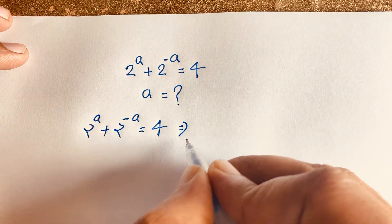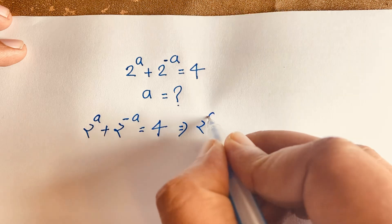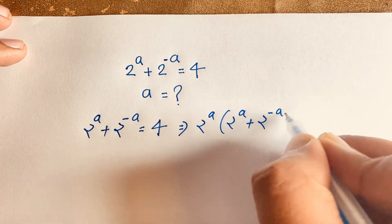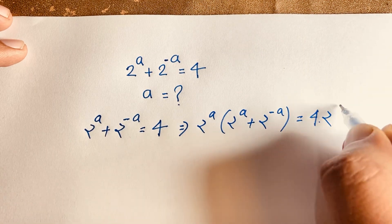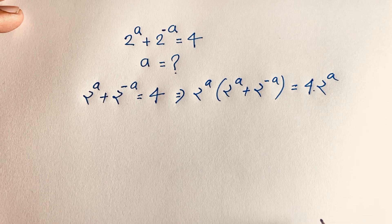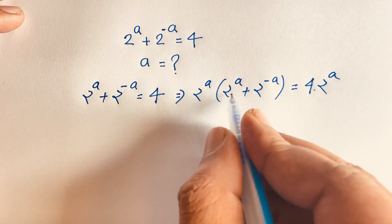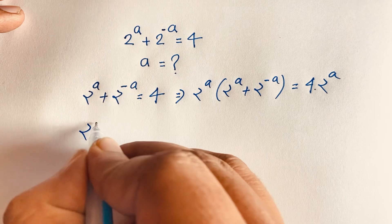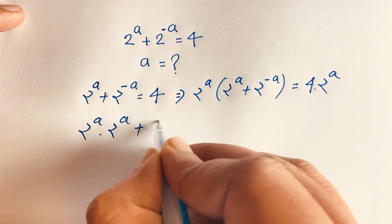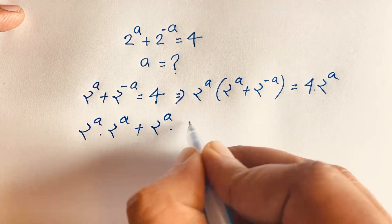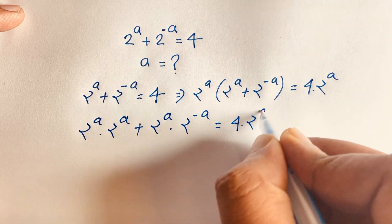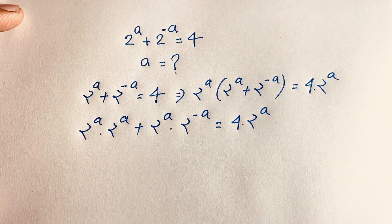Now, I multiply both sides by 2 to the power a. So this equation becomes: 2 to the power a times 2 to the power a, plus 2 to the power a times 2 to the power minus a, is equal to 4 times 2 to the power a.